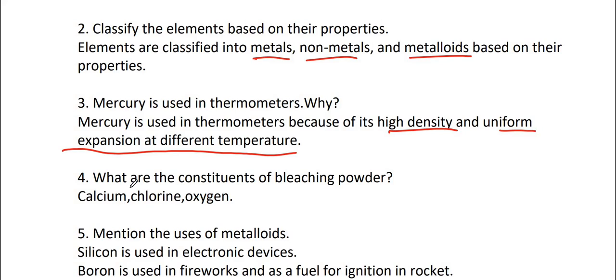Fourth, what are the constituents of bleaching powder? Bleaching powder are the constituents in a calcium, chlorine and oxygen. Bleaching powder are the calcium C-A-C-L-O twice. Okay.